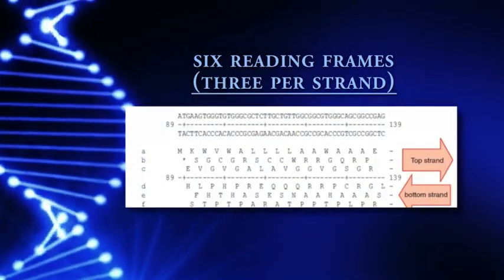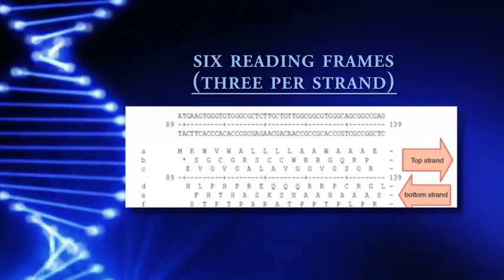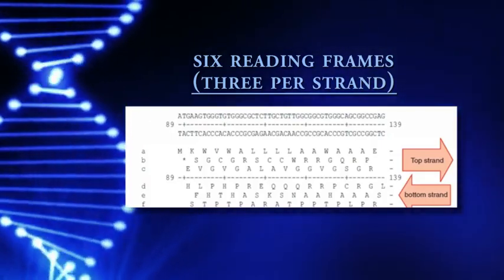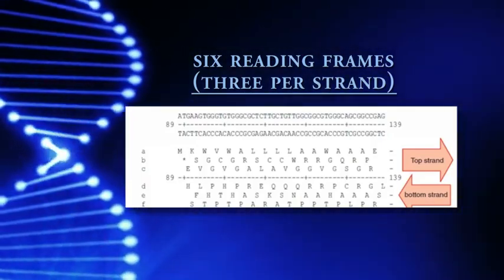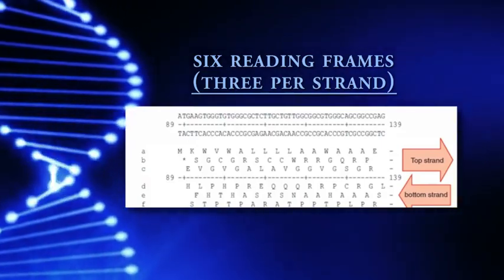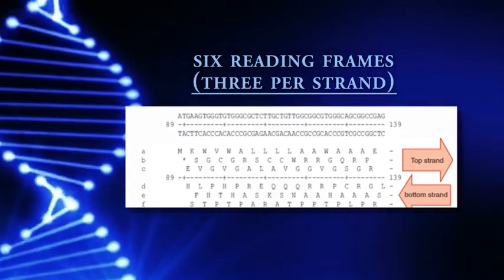A, B, and C represent the potential amino acid patterns. Remember that a triplet in DNA is sufficient to code for one amino acid. So if we start at the first position, we get the pattern M, K, W, V, W, A. If we started at the second position, we would get stop codon, that's the star, S, C, G.